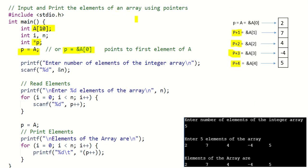While scanning the elements of the array we use &A[0], &A[1], &A[2], &A[3], &A[4] within the scanf function. Instead of writing these, we can use P, P+1, P+2, P+3, and P+4 to scan the five elements.